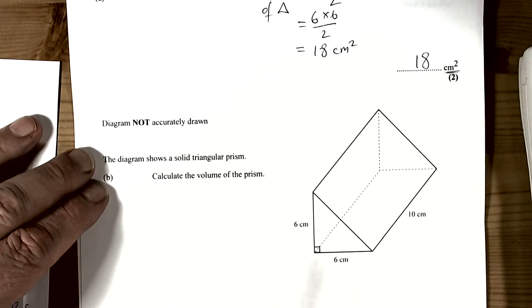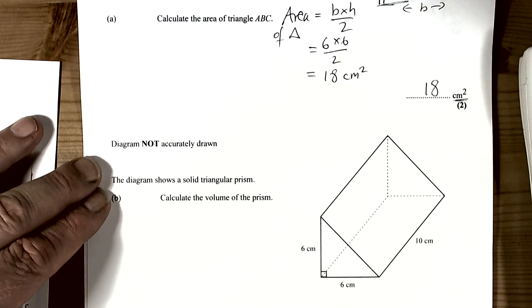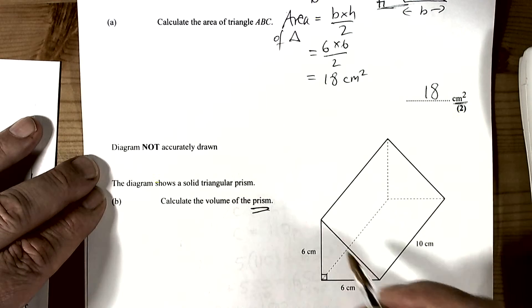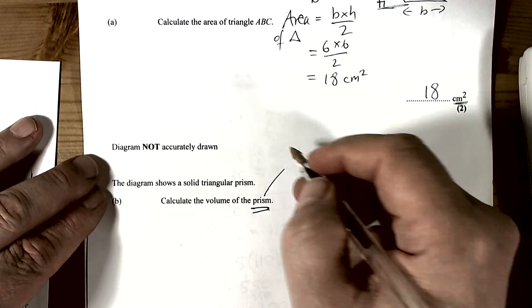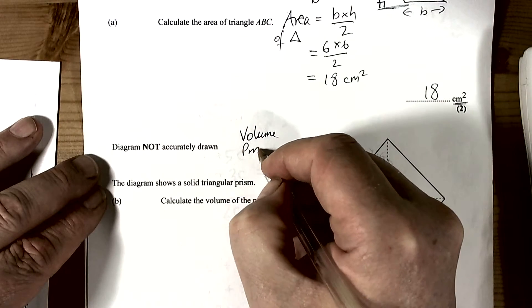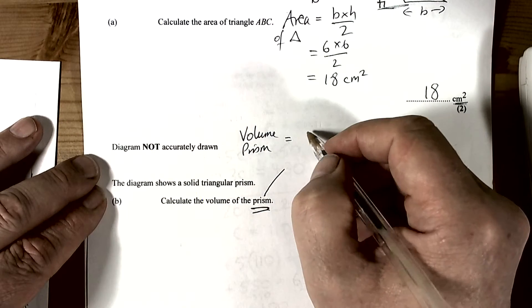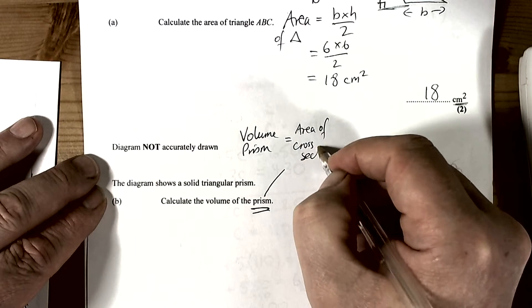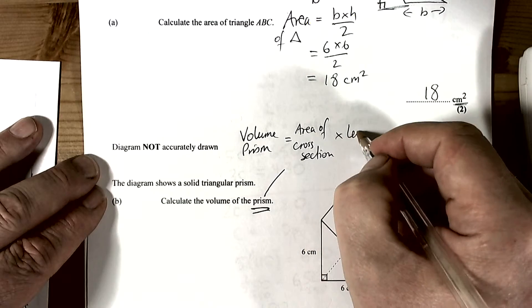The question goes on and asks us to work with the volume of this prism. Now they gave us a clue here that this is about prisms, so we should remember formulas again. The volume of a prism is equal to the area of cross section times the length.